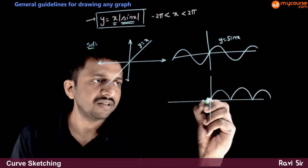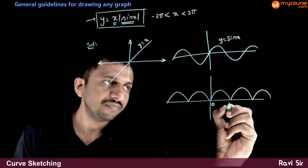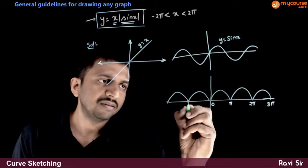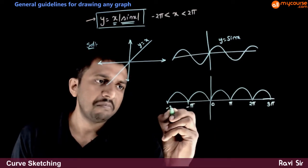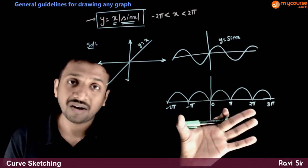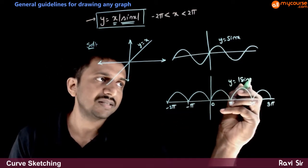This graph, this graph, this graph, so on. So 0, pi, 2 pi, 3 pi, minus pi, minus 2 pi. So this is how the graph of y equals mod sin x looks like.